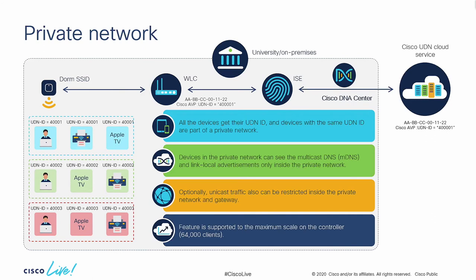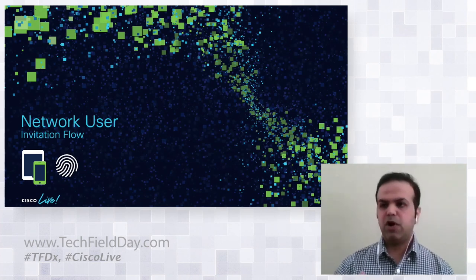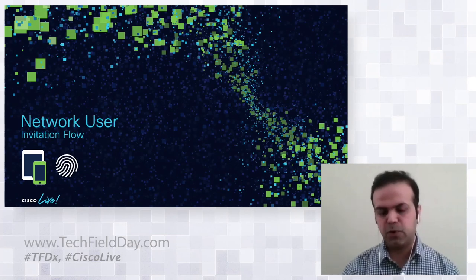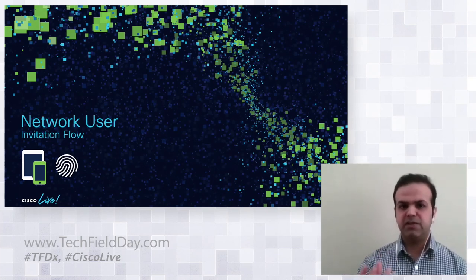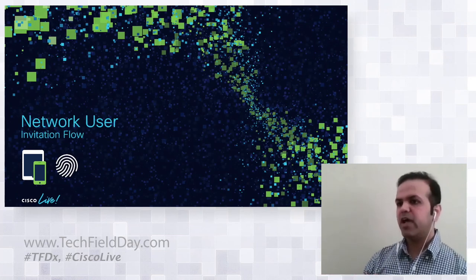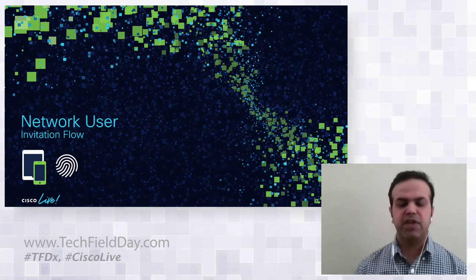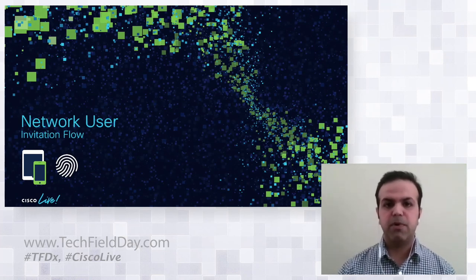The solution is supported to the maximum scale of the controller. In the case of the 9800, it is supported up to 64,000 clients. Now I want to talk about the invitation flow. We've covered registration and onboarding — how end users get a private network experience seeing only their own devices. But what if you want to share something with a friend? That's where the invitation flow comes in — you can invite trusted users to your private network.